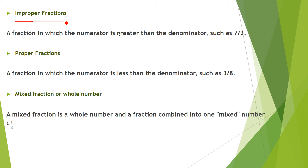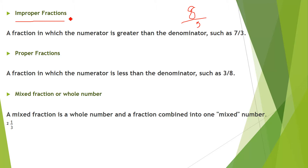The first is the improper fraction. If the numerator is greater than the denominator, it is called an improper fraction. Examples include 7/3, 10/2, 22/5, and 30/10 — any fraction where the numerator is greater than the denominator.